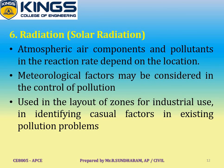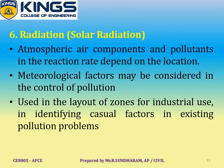The last factor is solar radiation. Solar radiation drives chemical reactions between atmospheric air components and pollutants. The reaction rate depends on location. The main application of all these meteorological factors is considered in the control of pollution from industrial plants — in the selection of location, design, equipment, and regular operations. These factors are also used in the layout of zones for industrial use, identifying causal factors in existing pollution problems, and establishing air quality criteria.